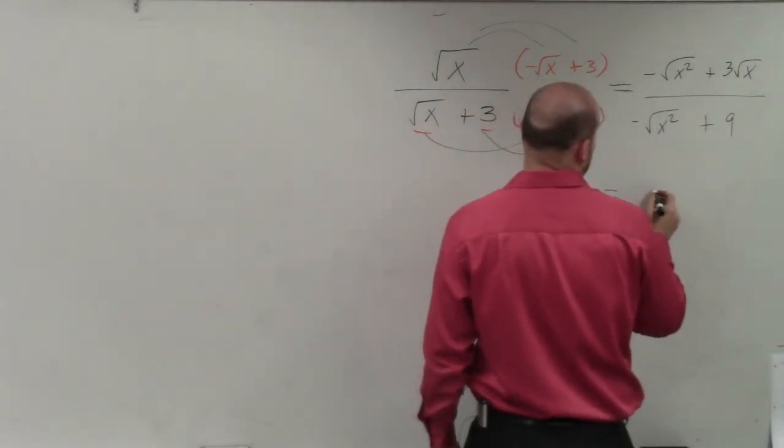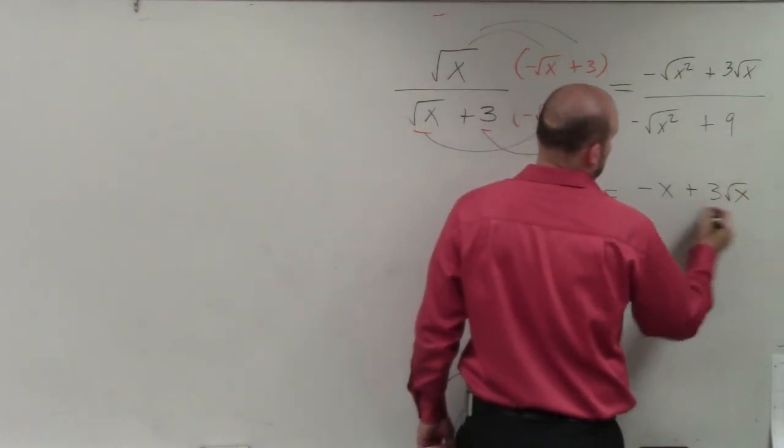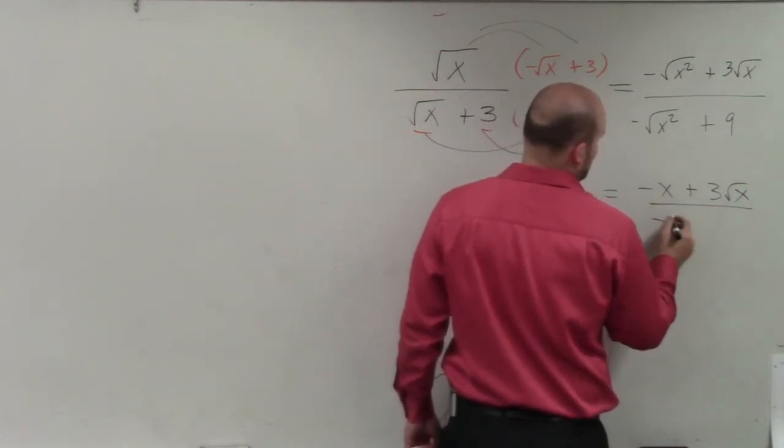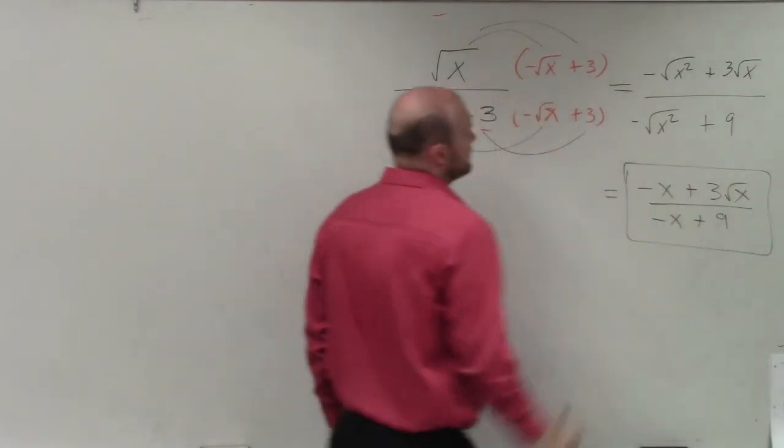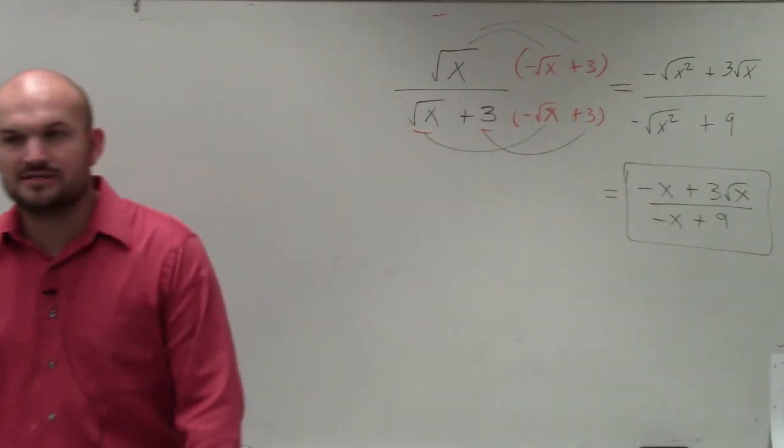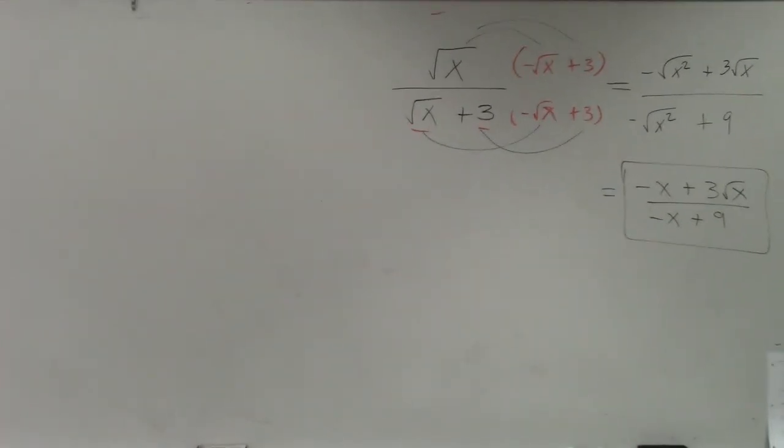In this case, then, it's going to be negative x plus 3 square root of x all over negative x plus 9. And that would be your final simplified answer. You guys can now see that your denominator, you guys can now see your denominator.